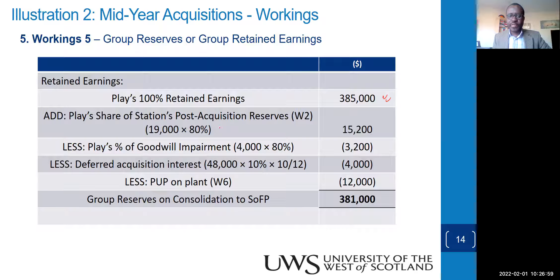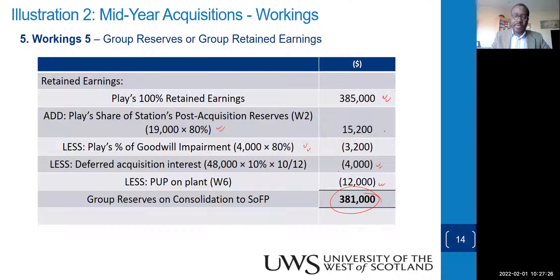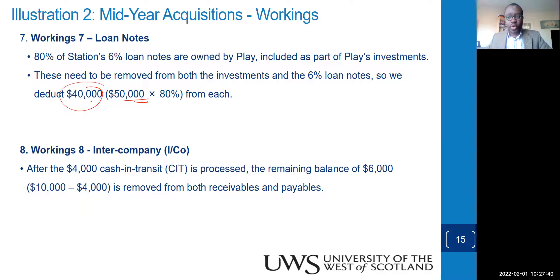Group reserves: start with the parent's total retained earnings figure in the books. Add the parent's 80% share of post-acquisition profits. Deduct 80% of the goodwill impairment. Deduct the interest expense on the deferred consideration that must be accrued — this is the unwinding of the discount. Also deduct the 12,000 PUP on the plant transferred to the subsidiary.